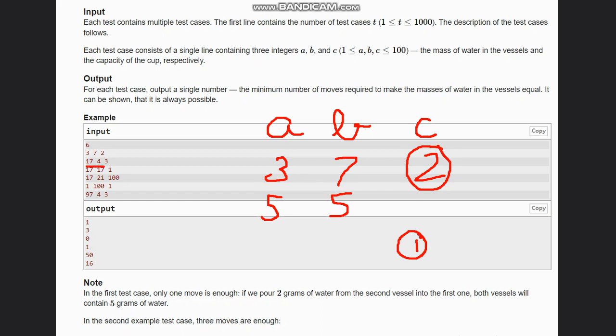Now taking the second example, which is 17, 4, and 3. So if you see that, 17, we take 3 grams of water from the first vessel into the second one. So if we take 3 grams, then what we are left with here? We are left with 14